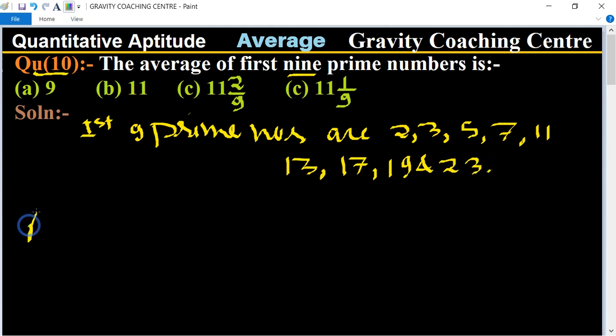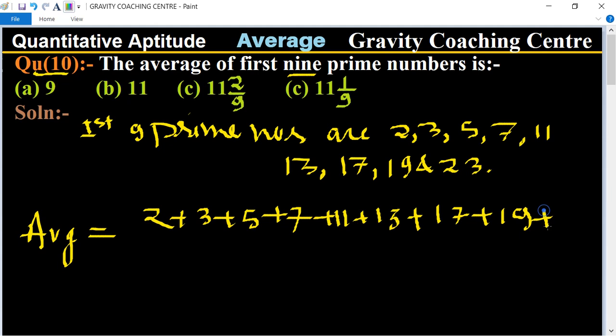So therefore their average equals the sum of observations means 2 plus 3 plus 5 plus 7 plus 11 plus 13 plus 17 plus 19 plus 23.